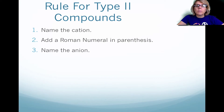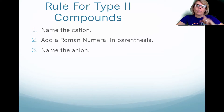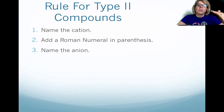So Type 2 compounds — what do they mean? These are actually transition metals, and as a result, we have to use Roman numerals in parentheses after the name, because there could be multiple cations for one element. Notice that we still name the cation first and then the anion second, but we put a Roman numeral in parentheses after the cation's name.